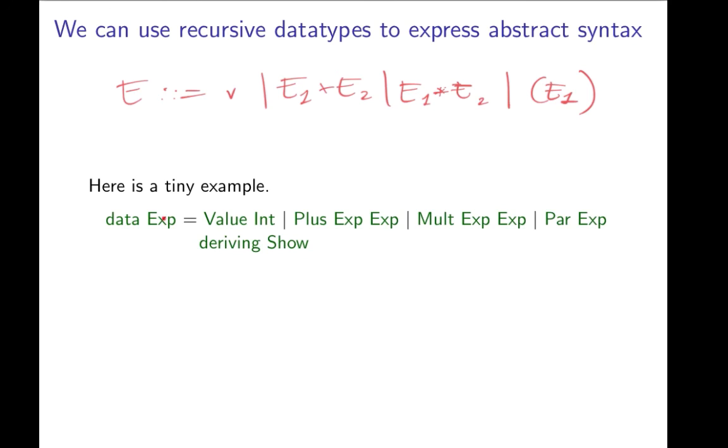And this can be expressed directly as a data type, the data type of expressions can be values, it could be plus expressions, it could be multiplication expressions, or parenthesized expressions. And if we want these expressions to be able to be shown in the Haskell system, we must make sure that they're of the type class Show, so here we write deriving Show here.